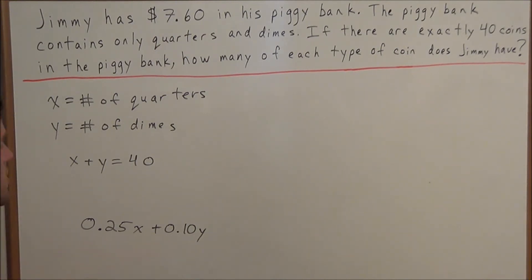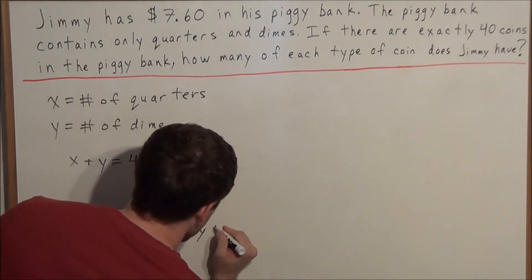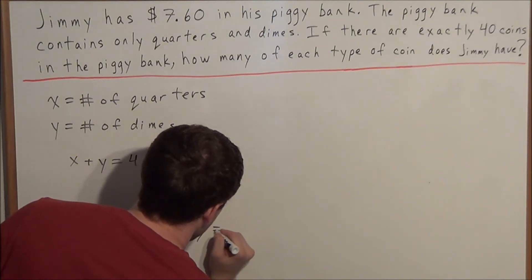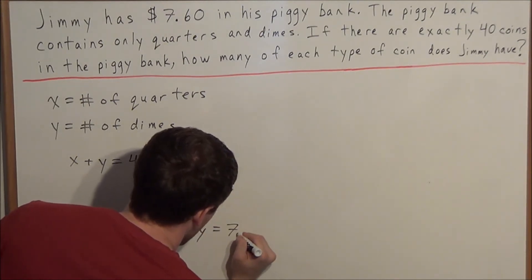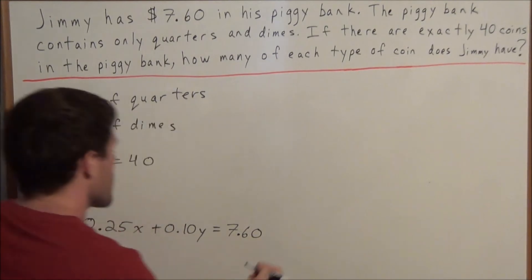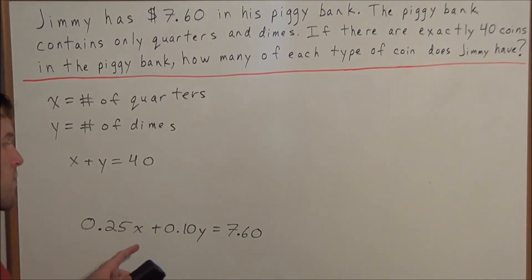So now we can set this equation equal to $7.60, but I'm just going to write 7.60. We're going to leave the currency symbols out, because all we're interested in is the number of quarters and dimes that he has.